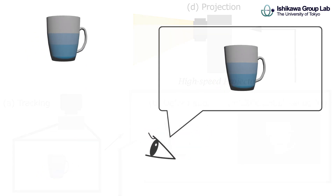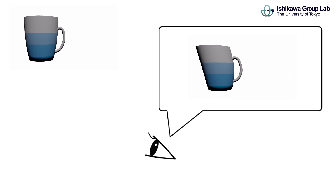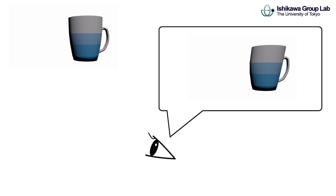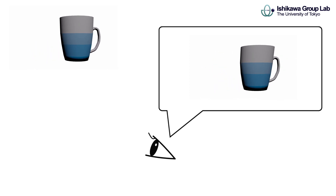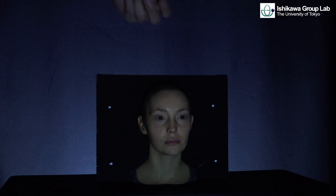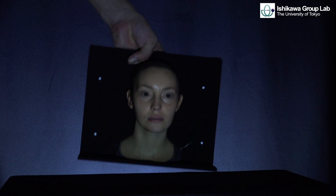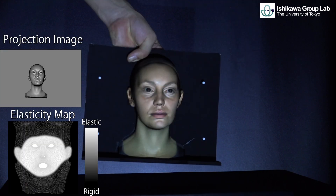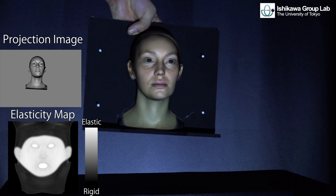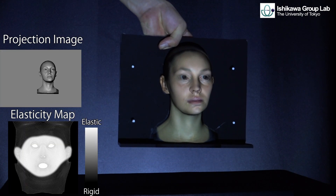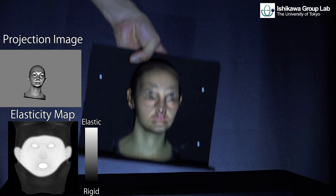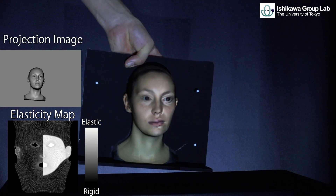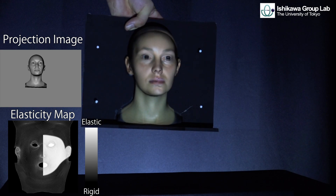As a result, the audience feel the illusion as if the target deformed. The projection target appears to have elasticity by projecting the image. It is possible to control the degree of elasticity for each area by using elasticity maps.